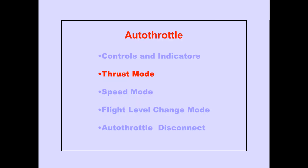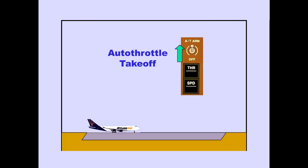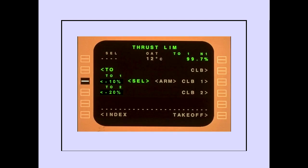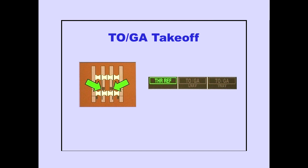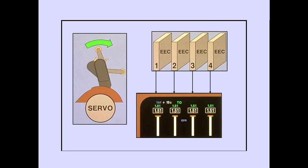Let's look at an example of thrust mode operation during an autothrottle takeoff. First, the autothrottle must be armed. The desired takeoff thrust mode is selected on the FMS-CDU during pre-flight. Pushing a TOGA switch displays thrust reference on the PFD. The autothrottle advances the thrust levers to the selected limit. The servo moves the thrust levers together. The electronic engine controls, or EECs, then adjust each engine to attain the selected thrust setting. The EEC is discussed in the power plant modules.